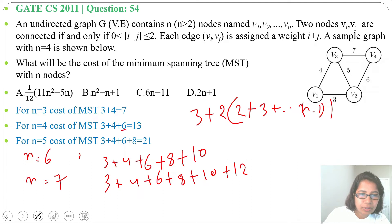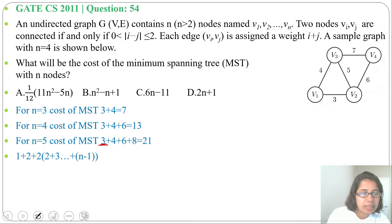You can mark here, last term is 6=2×3 whereas n=4. Here last term is 8=2×4, n=5. So you can write n-1. And these 3 we can split as 1+2.